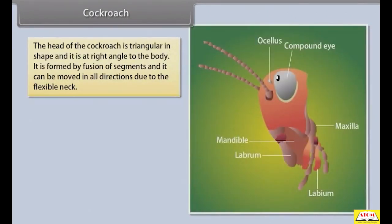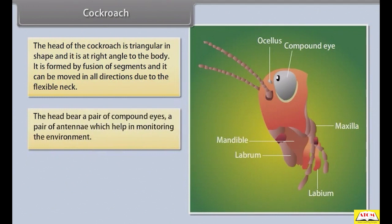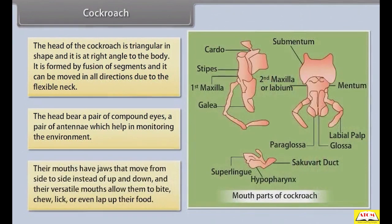The head of the cockroach is triangular in shape and at right angle to the body. It is formed by the fusion of segments and can be moved in all directions due to a flexible neck. The head bears a pair of compound eyes, a pair of antennae which help in monitoring the environment. Their mouths have jaws that move from side to side instead of up and down, and their versatile mouths allow them to bite, chew, lick, or even lap up their food.